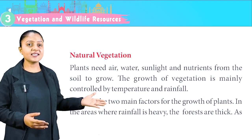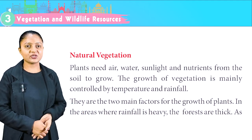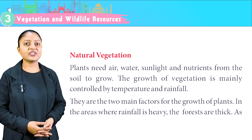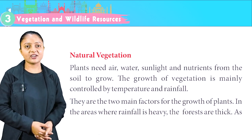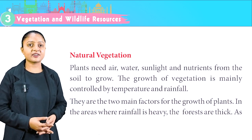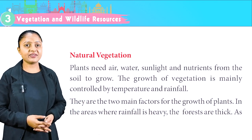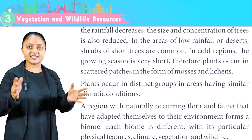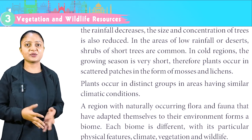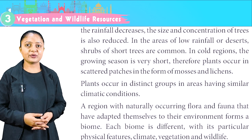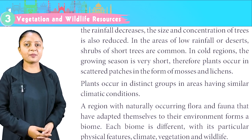Plants need air, water, sunlight and nutrients from the soil to grow. The growth of vegetation is mainly controlled by temperature and rainfall — the two main factors for the growth of plants. In areas where rainfall is heavy, the forests are thick. As rainfall decreases, the size and concentration of trees is also reduced. In areas of low rainfall or deserts, shrubs and short trees are common.